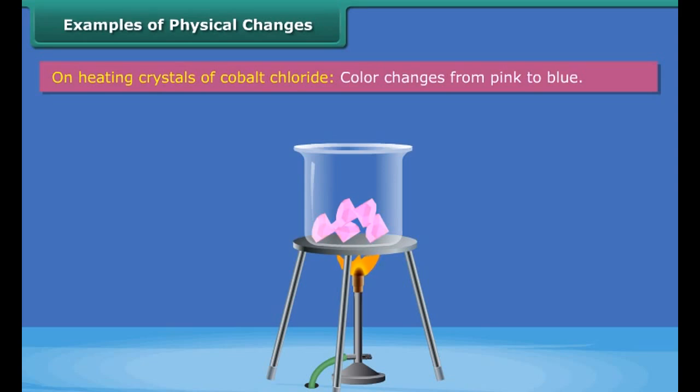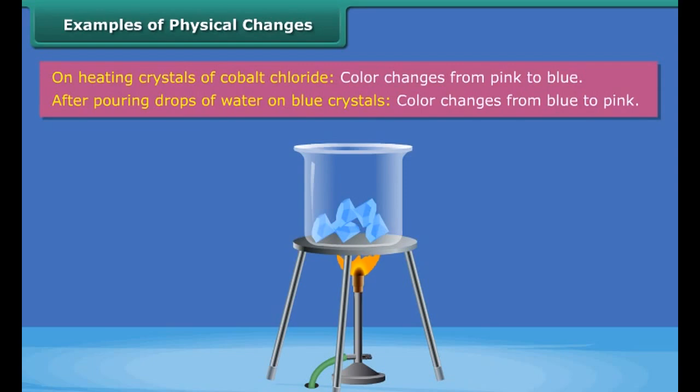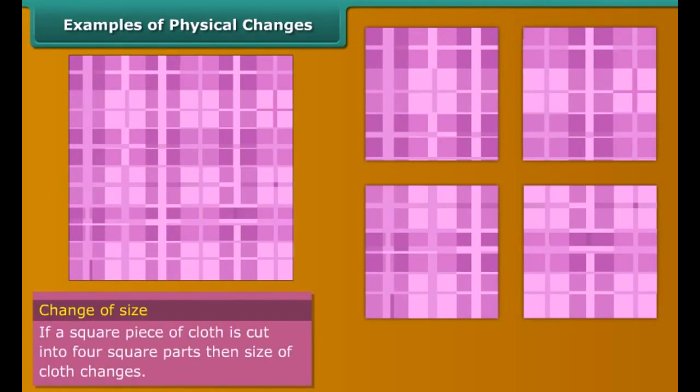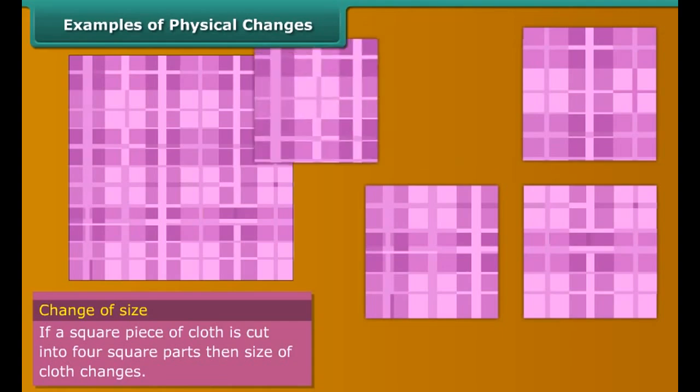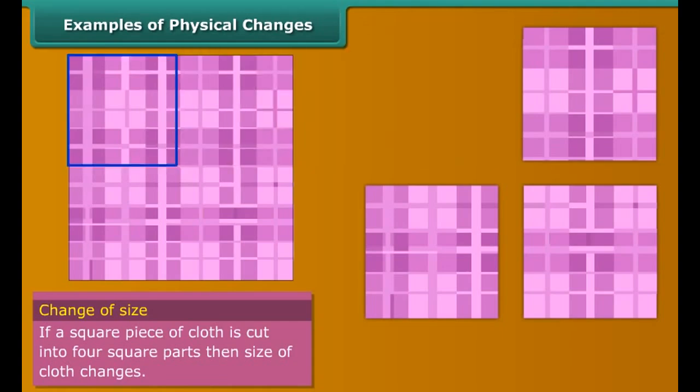Let us take crystals of cobalt chloride which are pink in color. On heating these crystals change to blue. When some drops of water are poured on blue crystals they regain their pink color.